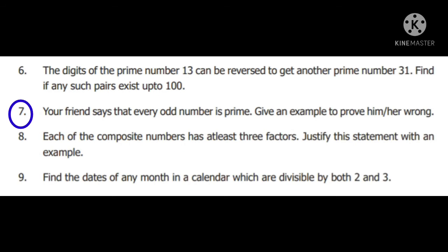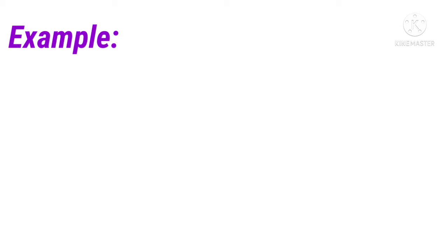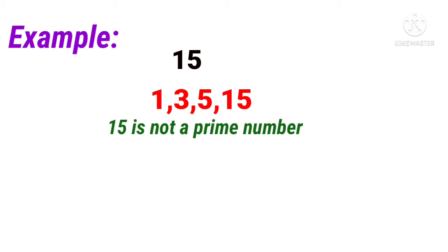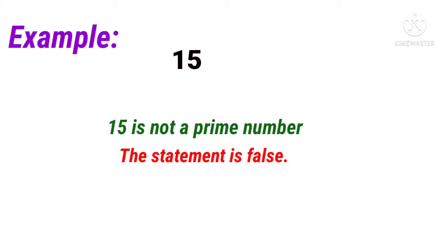Seventh sum: your friend says that every odd number is prime. Give an example to prove him or her wrong. Your friend's claim is that every odd number is a prime number – this is false. I will take the number 15, which is an odd number. But 15 is divisible by 1, 3, 5, and 15, so it is not a prime number. Therefore, the statement is false.